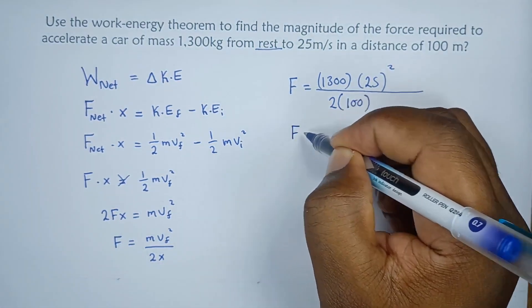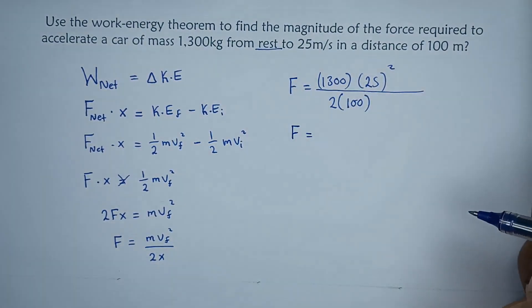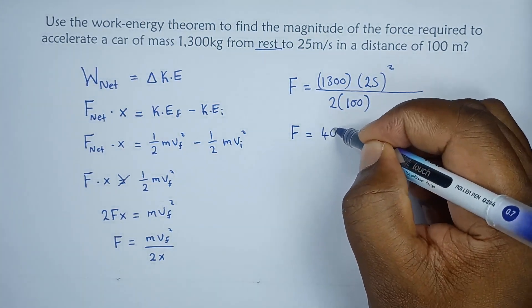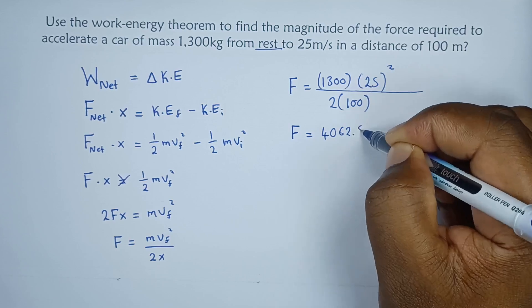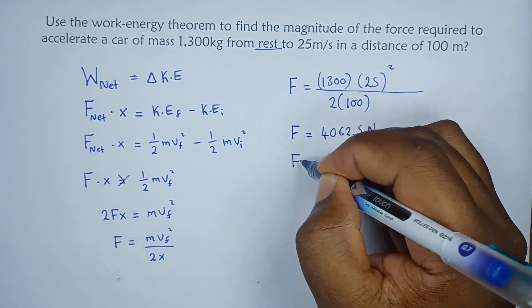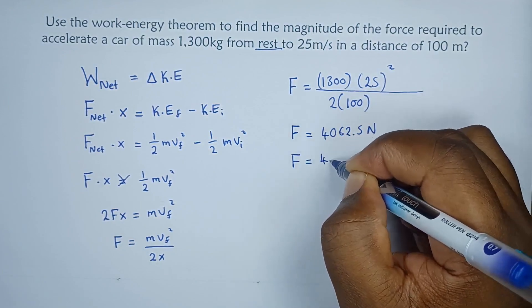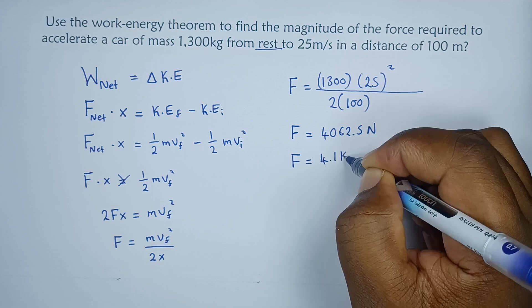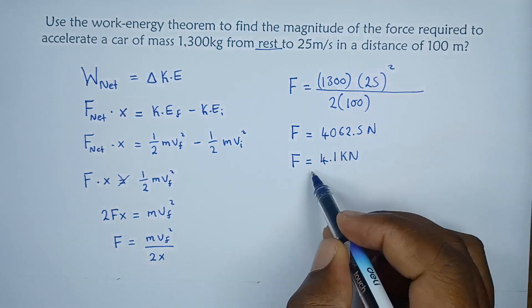So in this case, if we compute what we have here, we're going to get 4,062.5 newtons, which can be written as 4.1 kilo newtons.